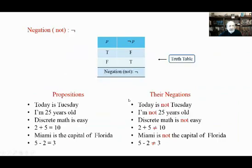The first operator is NOT — negation. We use the negation symbol for it. One way of defining what an operator does is to create a truth table. P is your proposition; it could be true or false. When P is true, NOT P is false; when P is false, NOT P is true.